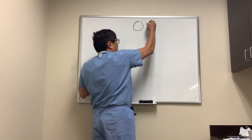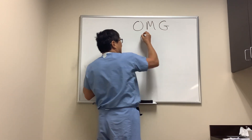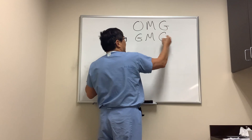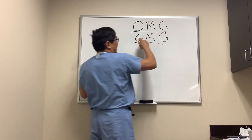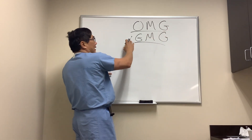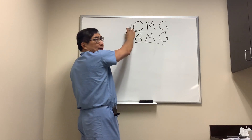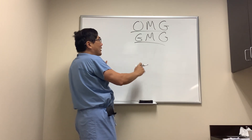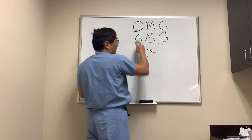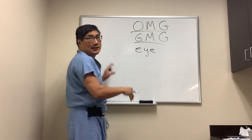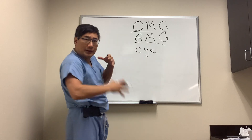Someone wanted to know why ocular myasthenia gravis affects the eye muscles first, and how it is that patients with generalized myasthenia present with ocular symptoms first — and why eye symptoms and signs are so predominant in both ocular and generalized myasthenia gravis as opposed to other parts of the body.